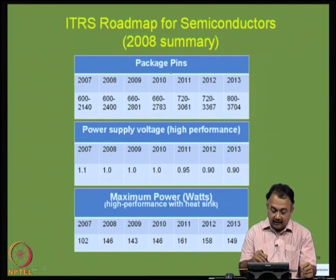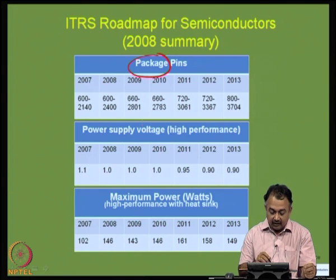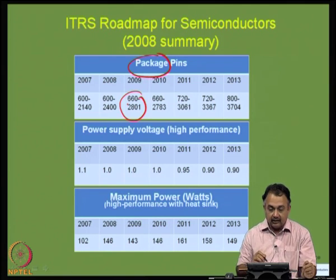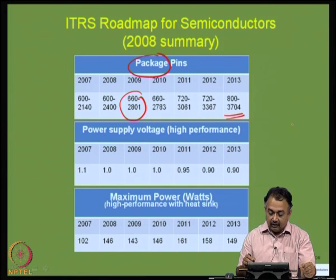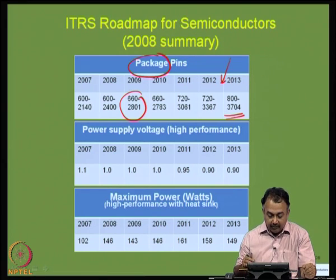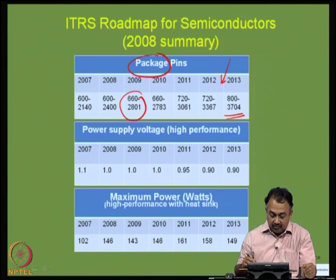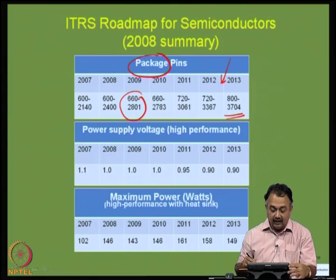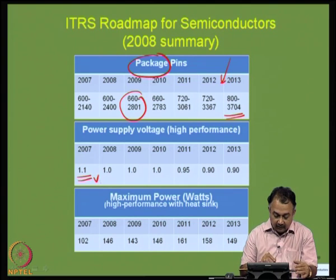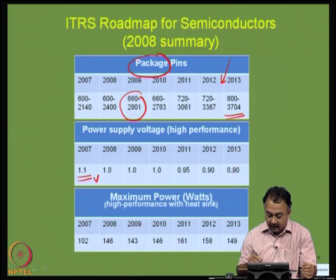At the same time, looking at the package side, the number of IO pins in 2009 is around 2800 maximum for various types of packages, and we can expect it to increase to close to 4000 for the year 2012–13. Power supply voltage for high performance products should be as low as possible — from 1.1 volts in 2007, we are now looking at 1 volt and 0.9 volts for energy-efficient systems.